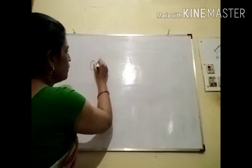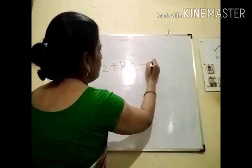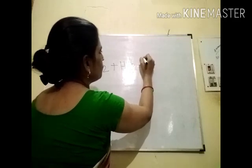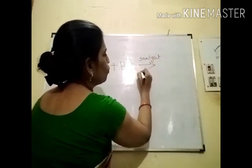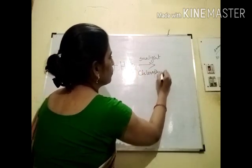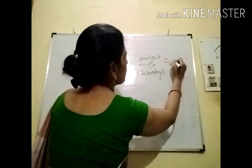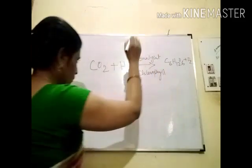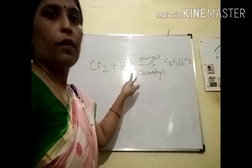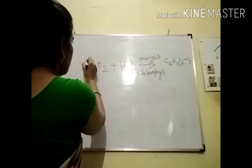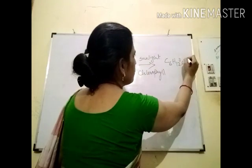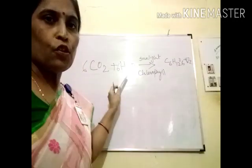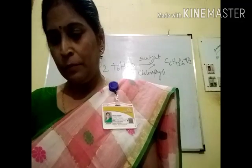Question number 3: write down the chemical equation for manufacture of food in green plants. The photosynthesis equation is: carbon dioxide plus water, in the presence of sunlight and chlorophyll, produces glucose (C6H12O6) plus oxygen (O2). The balanced equation is: 6CO2 + 6H2O → C6H12O6 + 6O2. This is the chemical equation of photosynthesis.